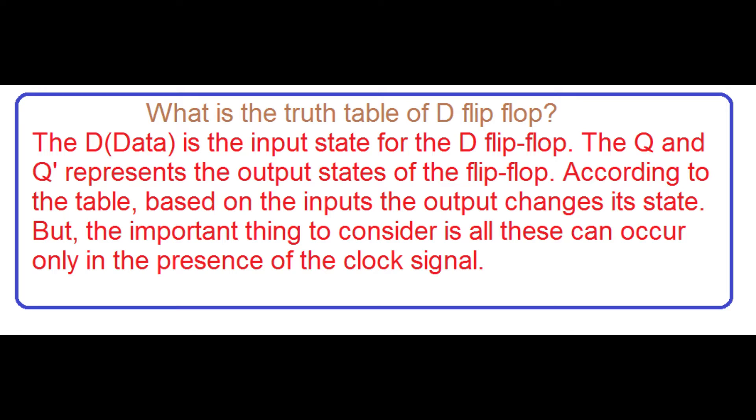What is the truth table of D flip-flop? The D, or data, is the input state for the D flip-flop. The Q and Q-bar represent the output states of the flip-flop. According to the table, based on the inputs the output changes its state. But the important thing to consider is all these can occur only in the presence of the clock signal.